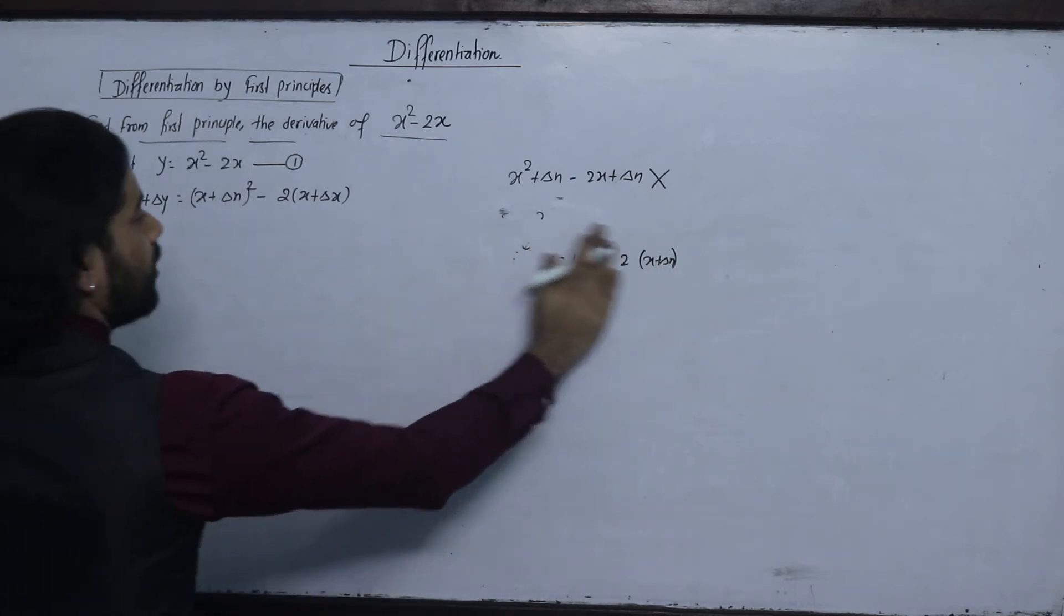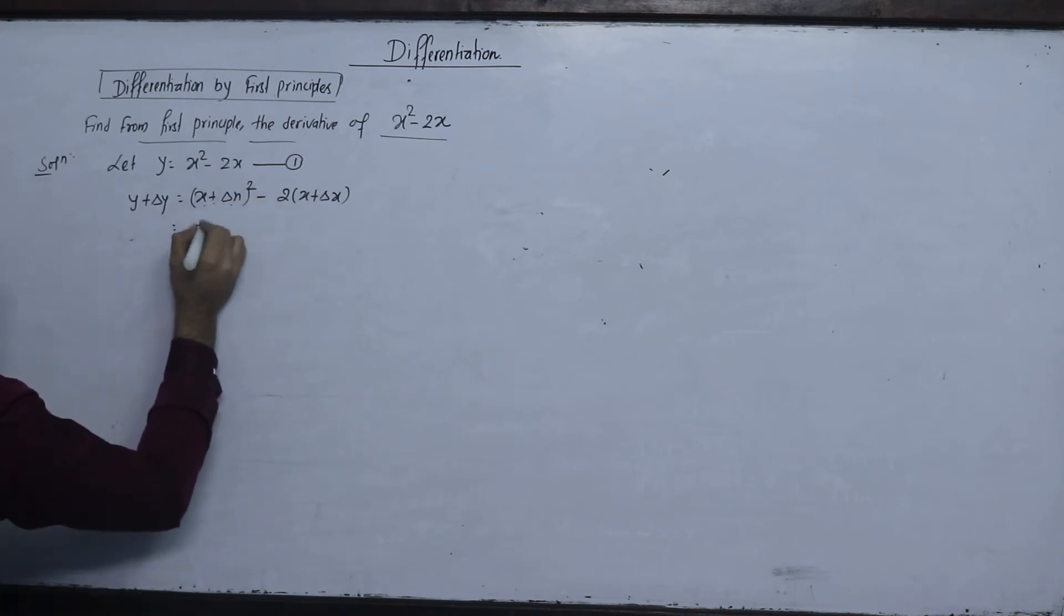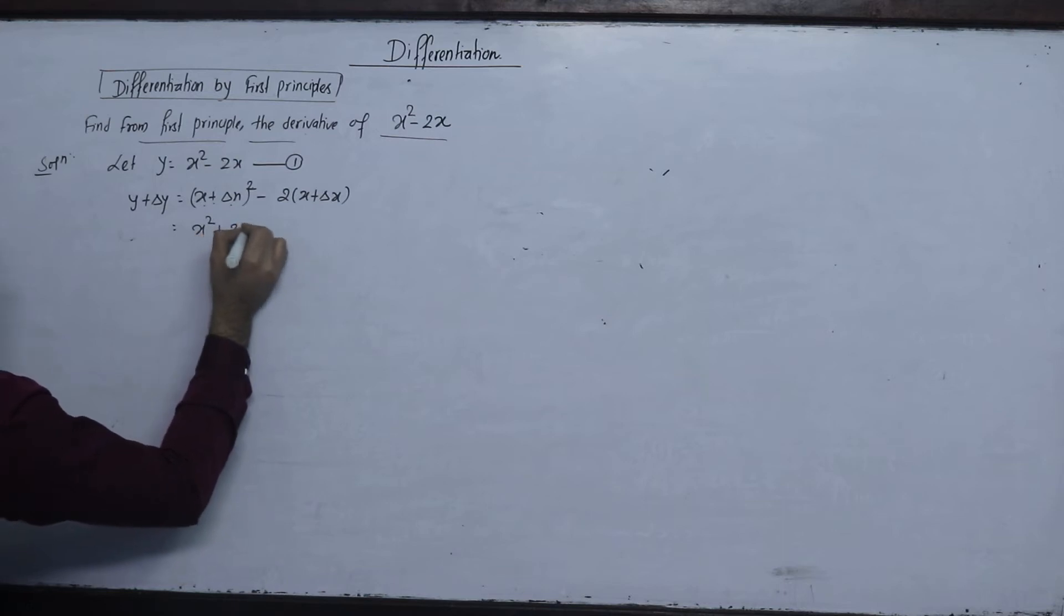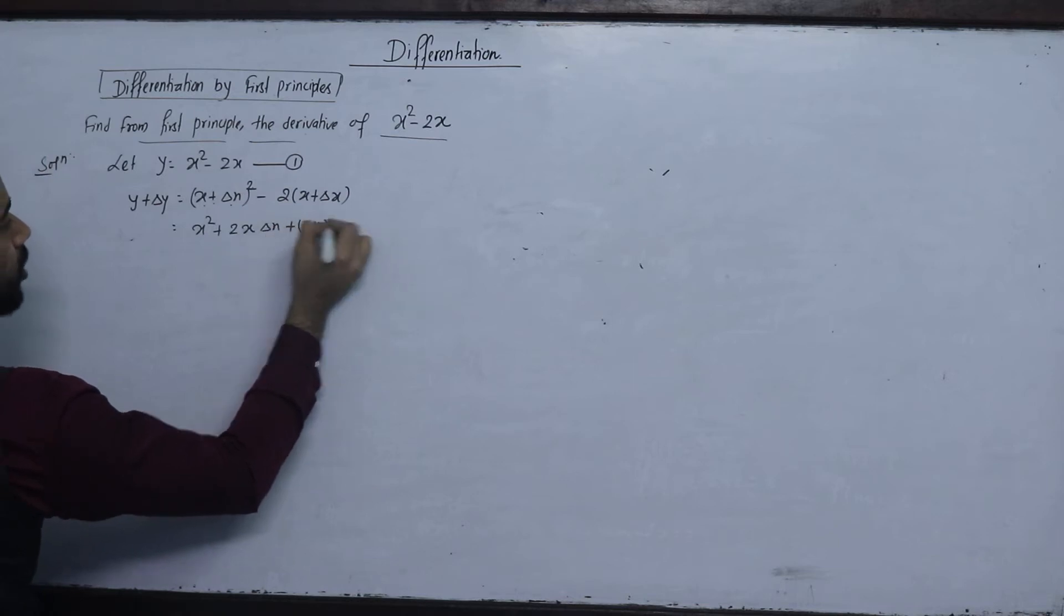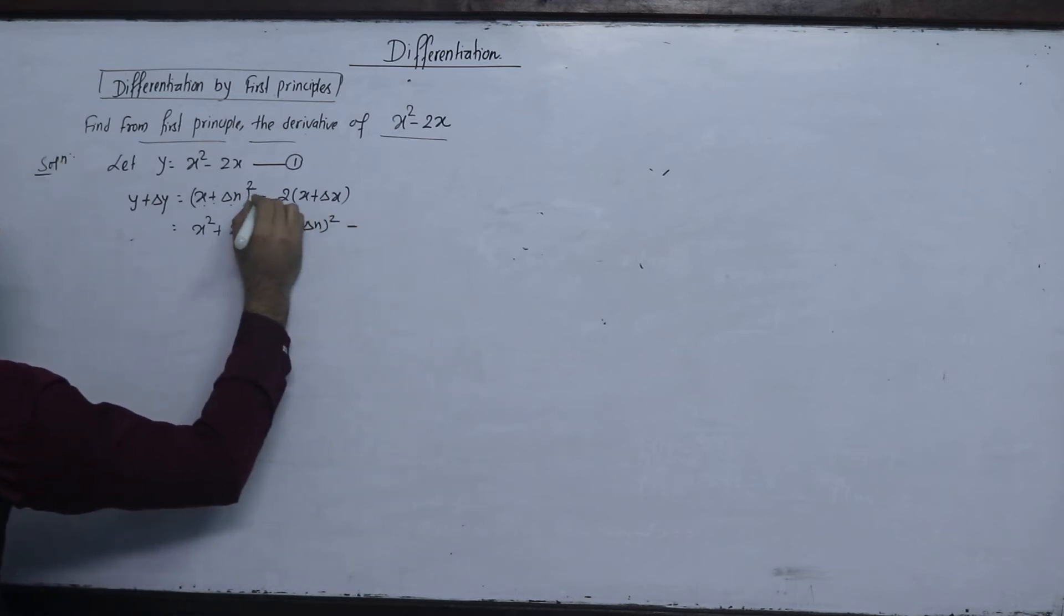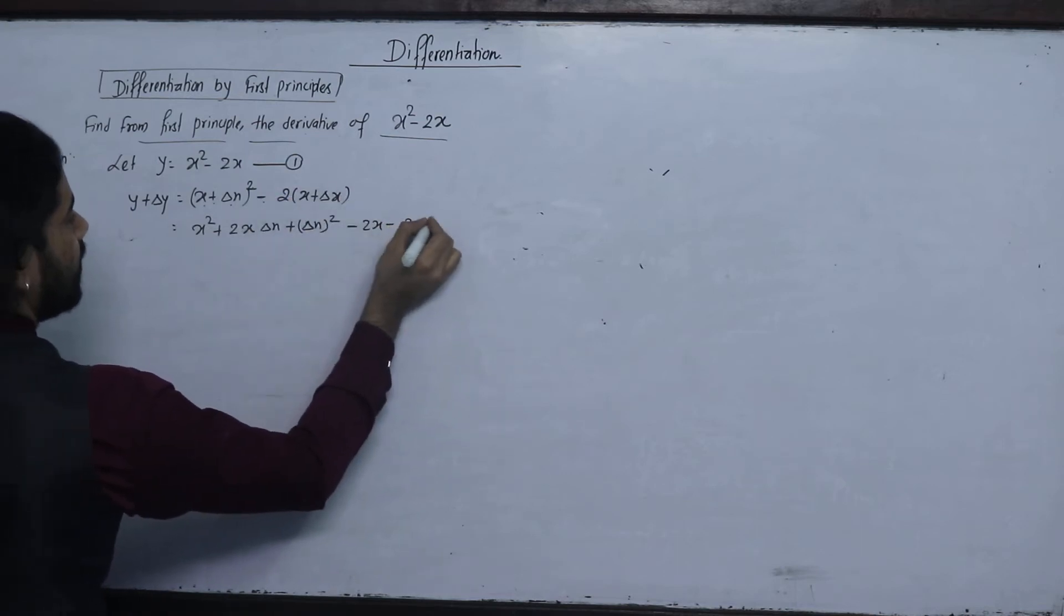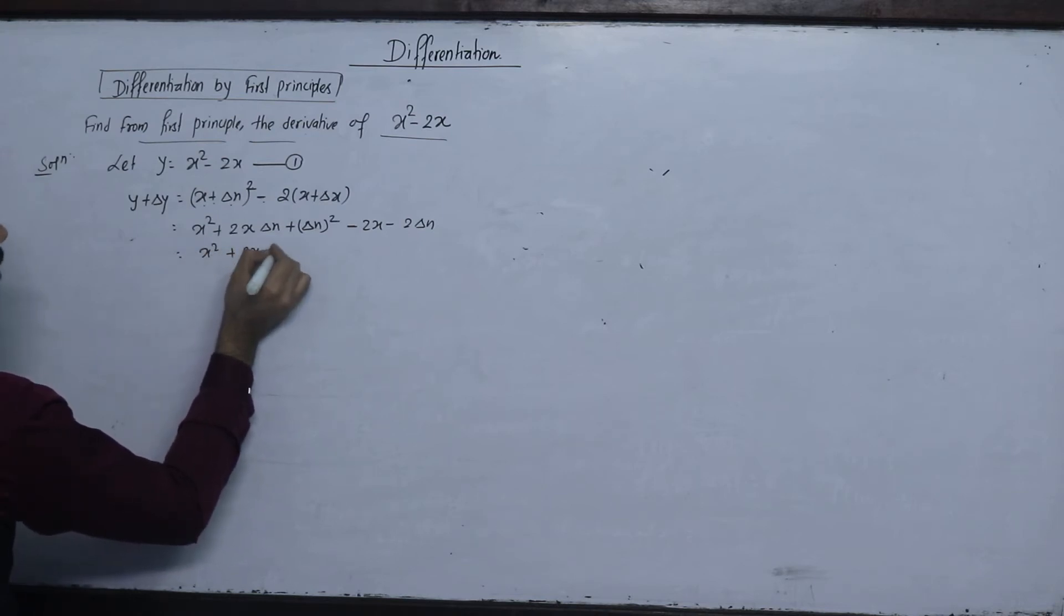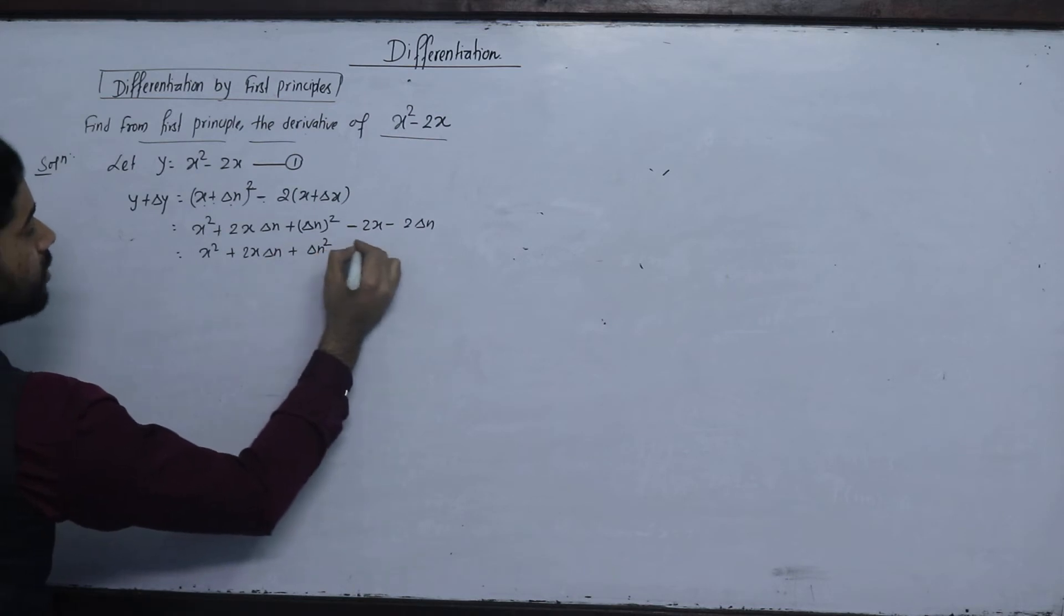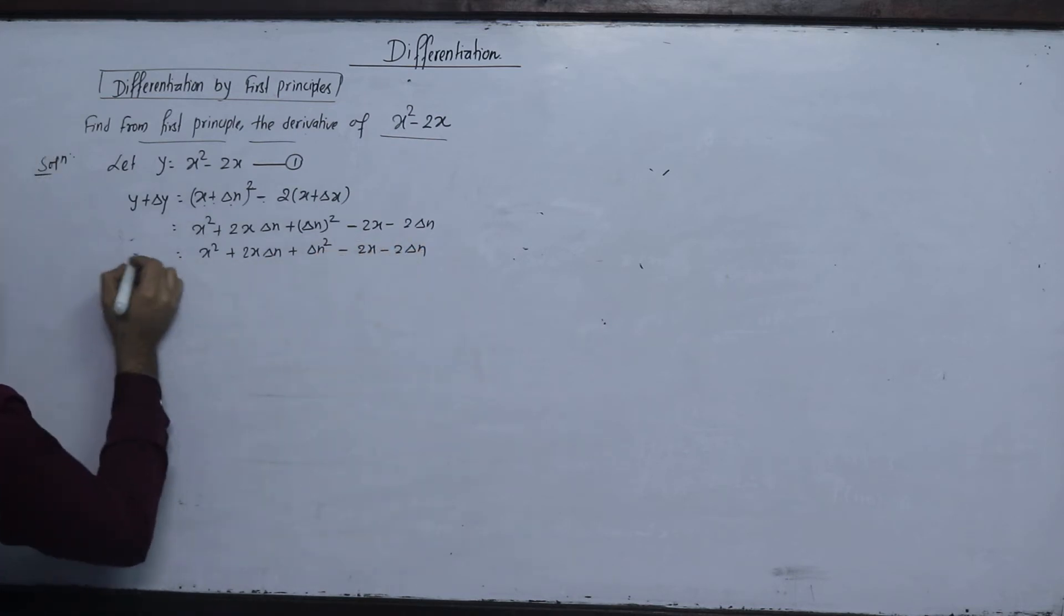If x takes in order for y equals to, a plus b square plus 2ab plus b square and minus 2x minus 2 del x. x square plus 2x del x plus del x square minus 2x minus 2 del x.